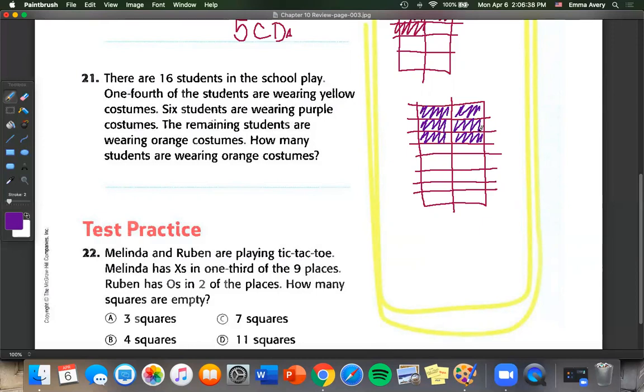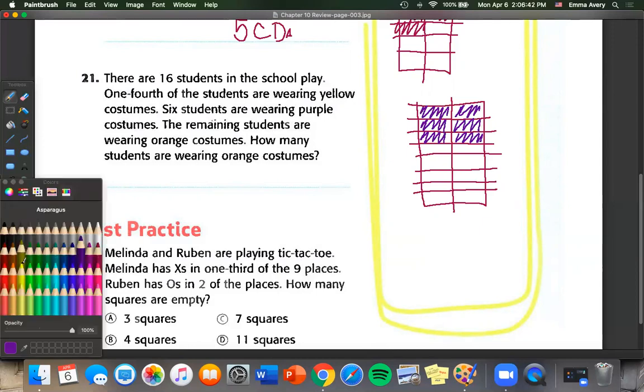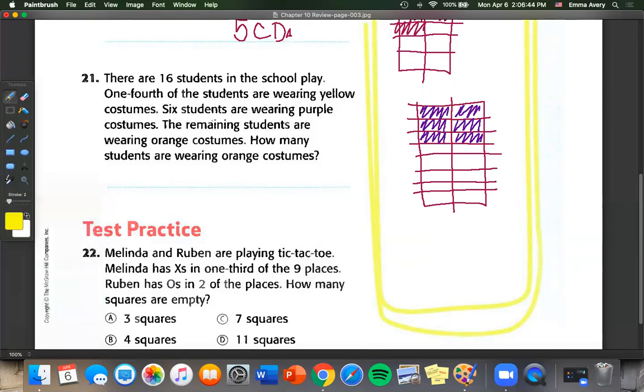One fourth of the students are wearing yellow. So we have to figure out what is one fourth of 16. Well, what times what equals 16? Four times four equals 16. So one fourth of 16 equals four. So we can color in four.